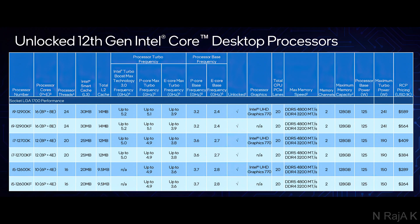The i5-12600K has 10 cores: 6 Performance Cores and 4 Efficient Cores, with 16 threads. L3 cache is 20 MB, L2 cache is 9.5 MB. Intel Turbo Boost Max Technology is supported. Performance Core boost is 4.9 GHz, base is 3.7 GHz. Efficient Core boost is 3.6 GHz, base is 2.8 GHz. Base power is 125W, maximum is 150W. Price is $289. The version without integrated graphics is $261.